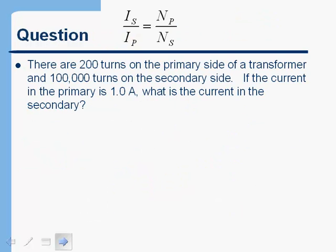Let's try another problem. There are 200 turns on the primary side of a transformer and 100,000 turns on the secondary side. If the current in the primary is 1 amp, what is the current in the secondary? This is the same transformer from a previous problem, and here we're asked for the current in the secondary, which is Is.